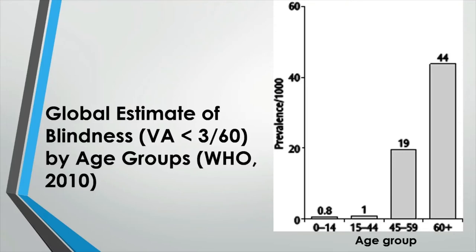As illustrated here, when the overall prevalence of blindness is broken down by age, blindness affects mainly the older sections of the population. Until around age 44, the prevalence is pretty low. But after that age group, the prevalence of blindness goes up approximately 20 times and increases exponentially.